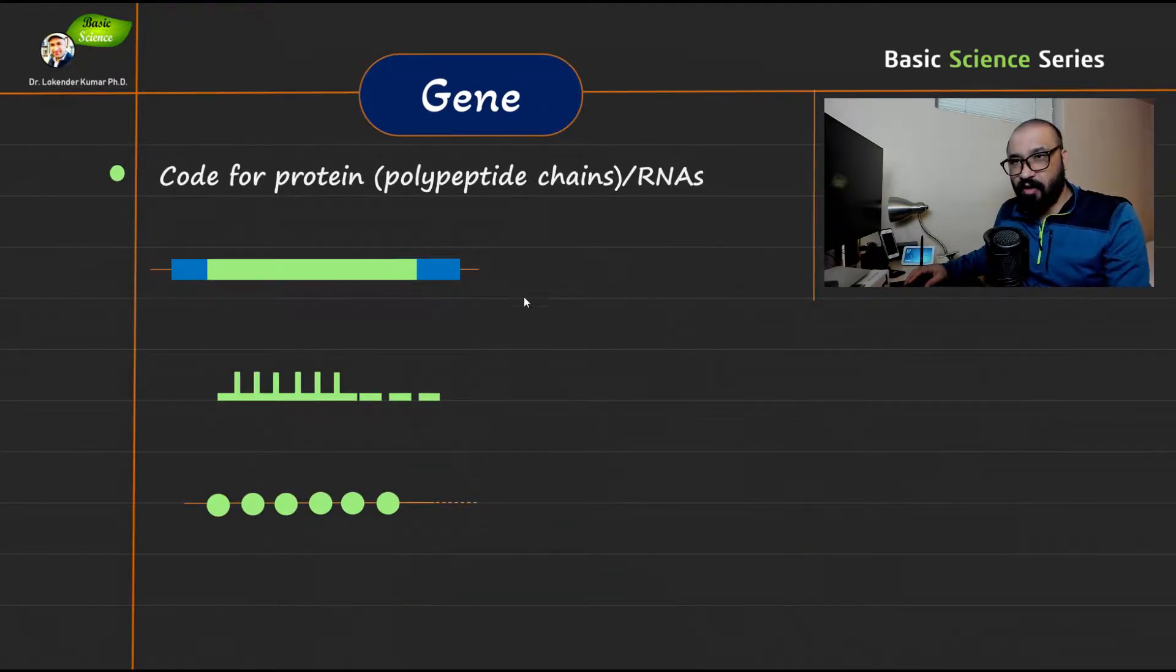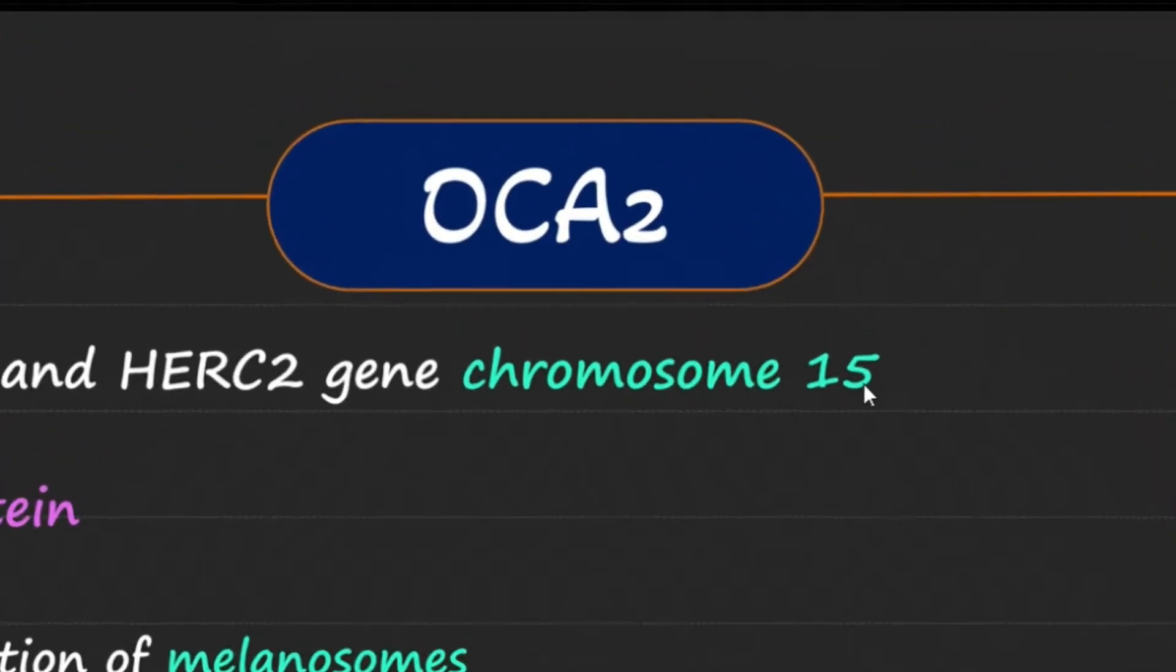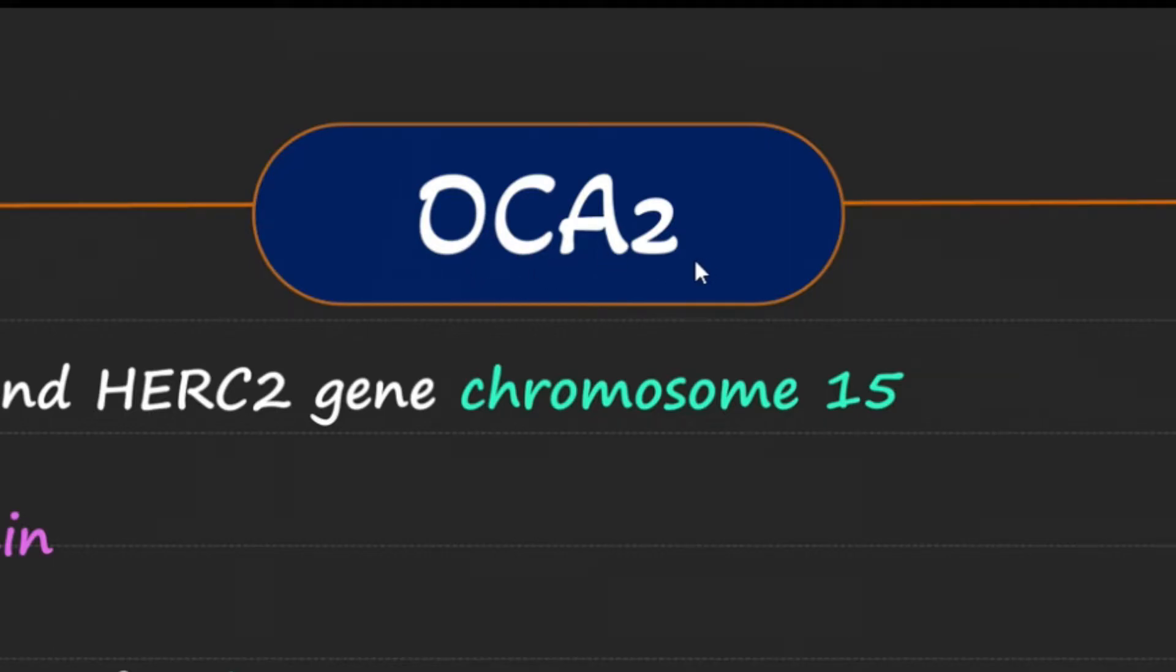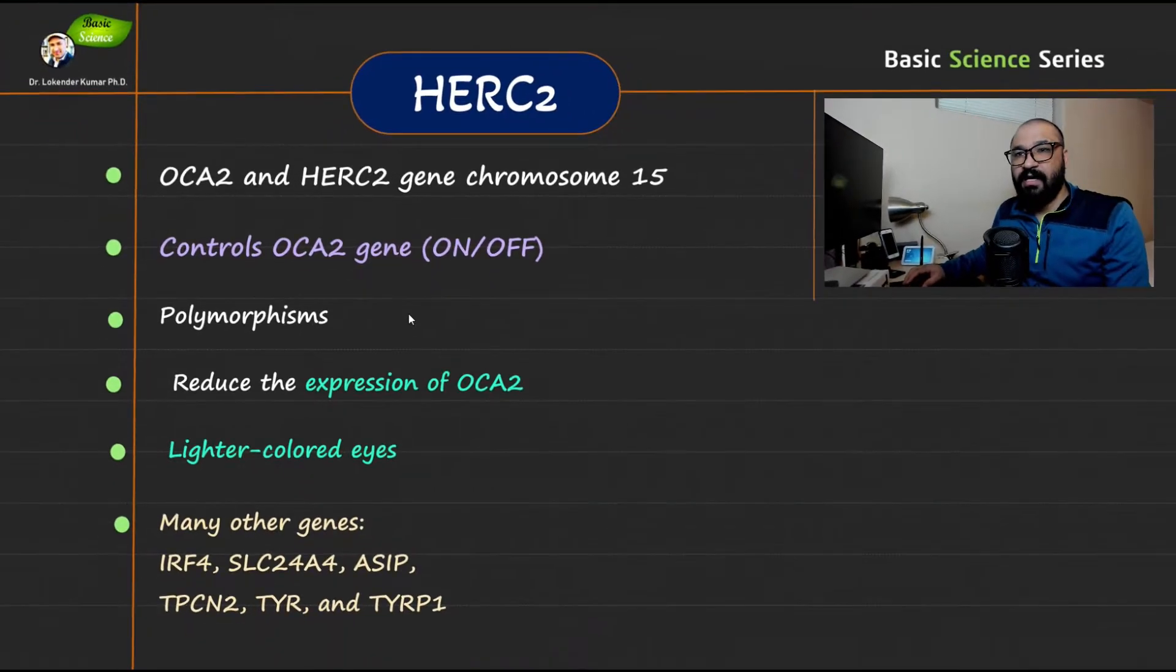I will explain the concept of gene in terms of central dogma, as you can see in this particular slide. After that, we will dig deep into the mechanism of human eye color where some of the genes, as you can see, I have mentioned OCA2 gene and HERC2 gene.